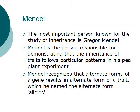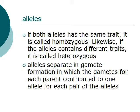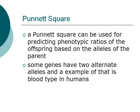alternate forms of a trait, which he named alleles. If both alleles have the same traits, it is called homozygous. On the other hand, if it contains different traits, it is called heterozygous. Alleles separate in gamete formation, in which the gametes from each parent contribute one allele.